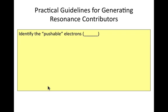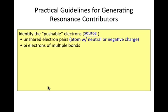The first thing you want to do is always identify your pushable electrons, and these are going to be your electron source. This is normally an unshared electron pair. Also, multiple bonds and the pi electrons of those multiple bonds are great pushable electrons.